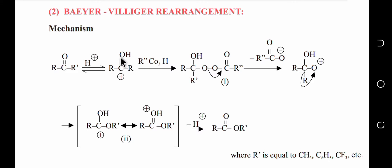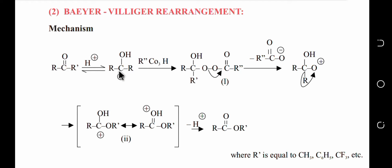When the bond breaks away from carbon toward oxygen, the carbon gets a partial positive charge — forming a carbocation. So in the first step, carbocation formation occurs.